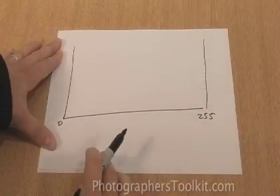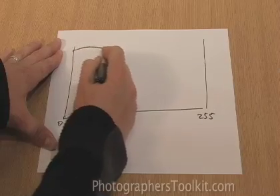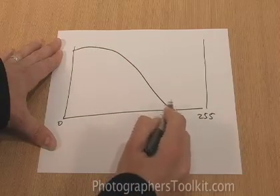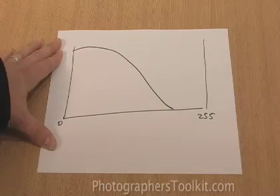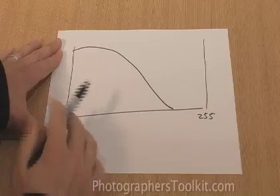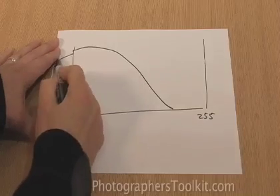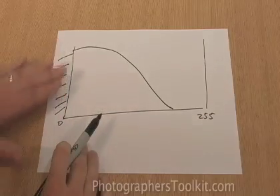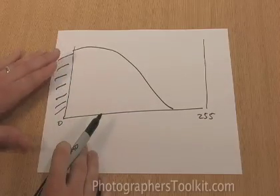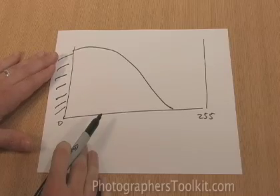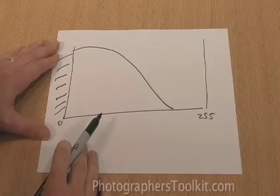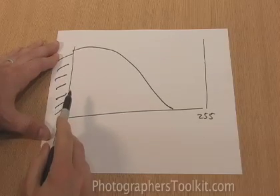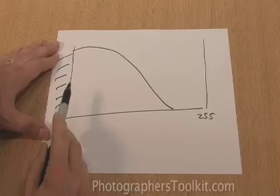On the other hand, here we have a histogram where we have the cropping of data off to the left side, which means we have an image that is extremely underexposed, with lots of areas going to complete black in which there's no detail.